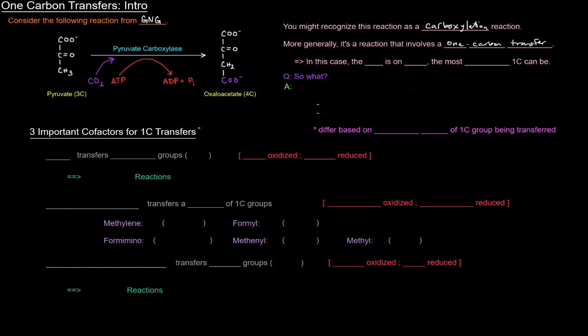In this case, the one carbon is on carbon dioxide, which is the most oxidized that one carbon can be, a one carbon group can be. So what? Who cares, right? Why am I saying this?